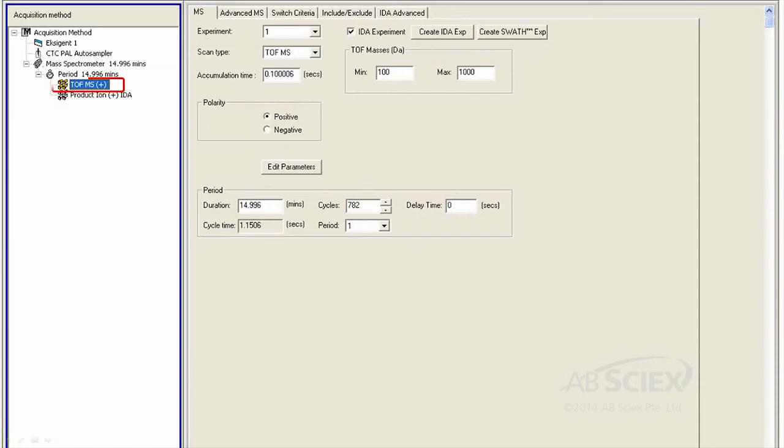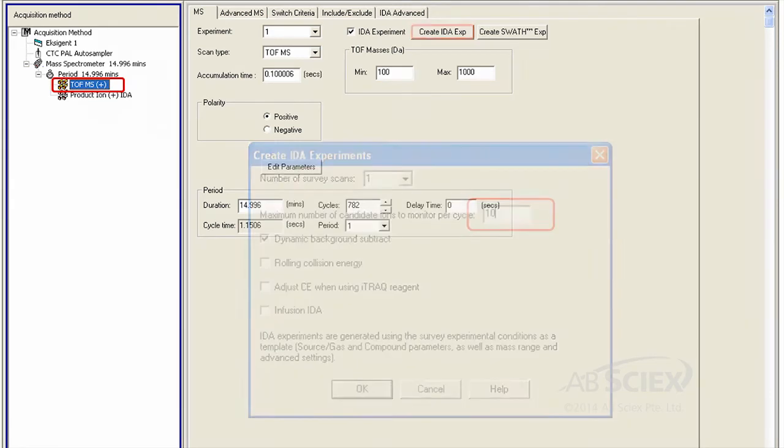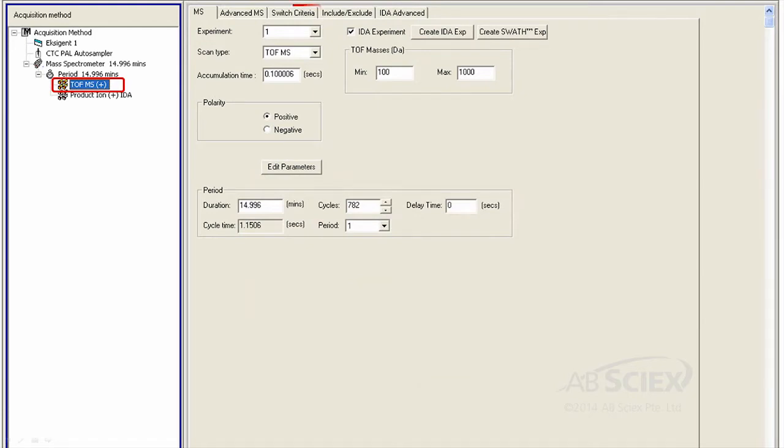The information-dependent acquisition, or IDA algorithm, on the TripleTOF ensures that even for a non-targeted data acquisition method, you are sure to get excellent coverage of all peaks in your sample.